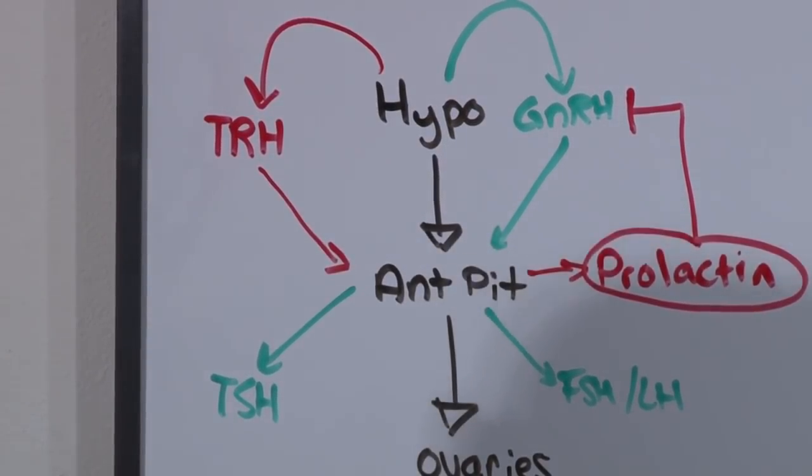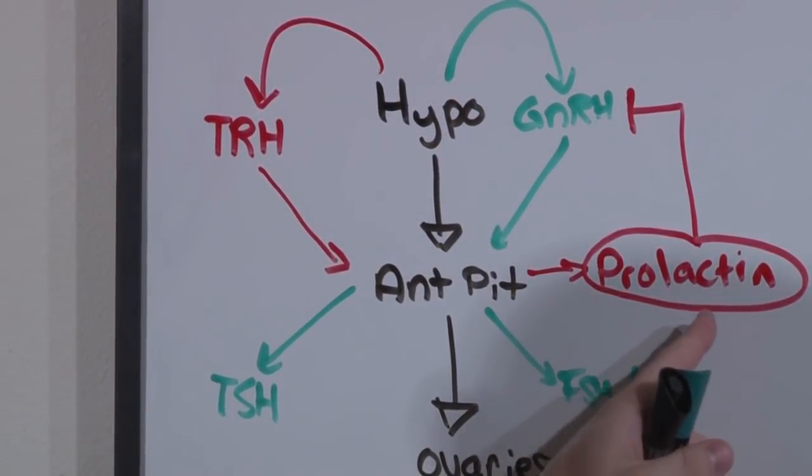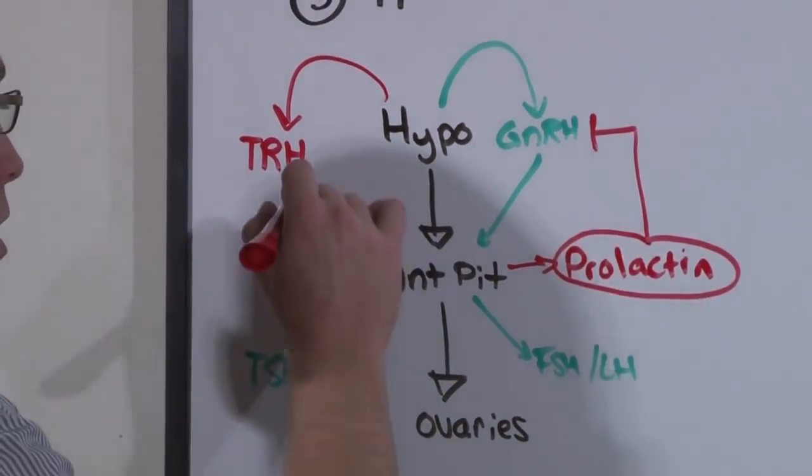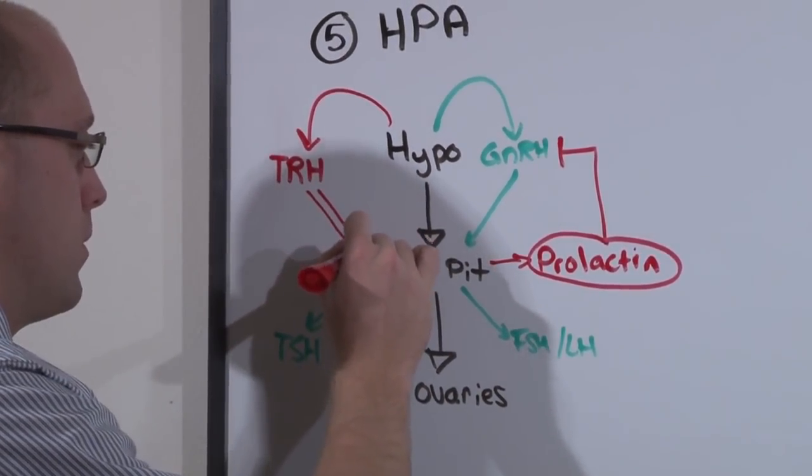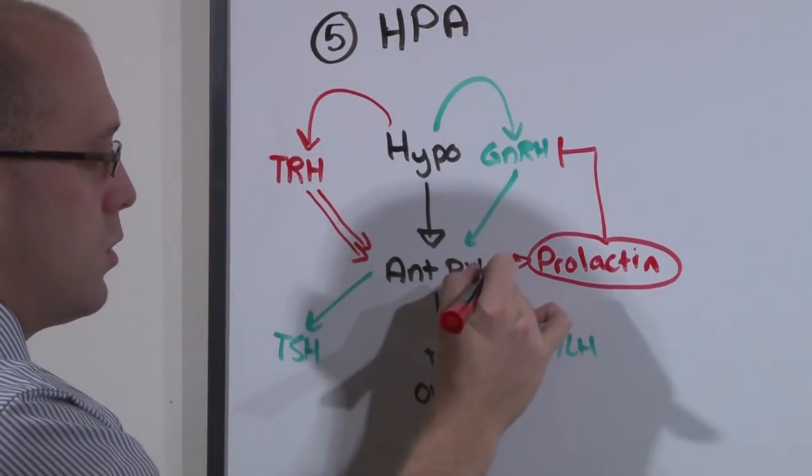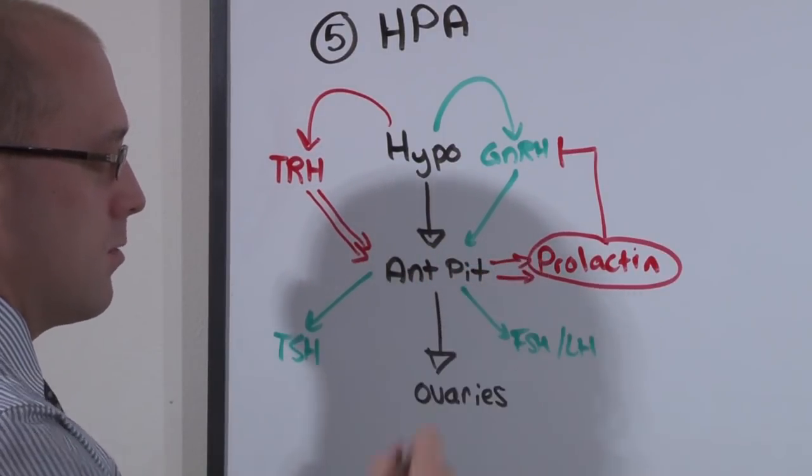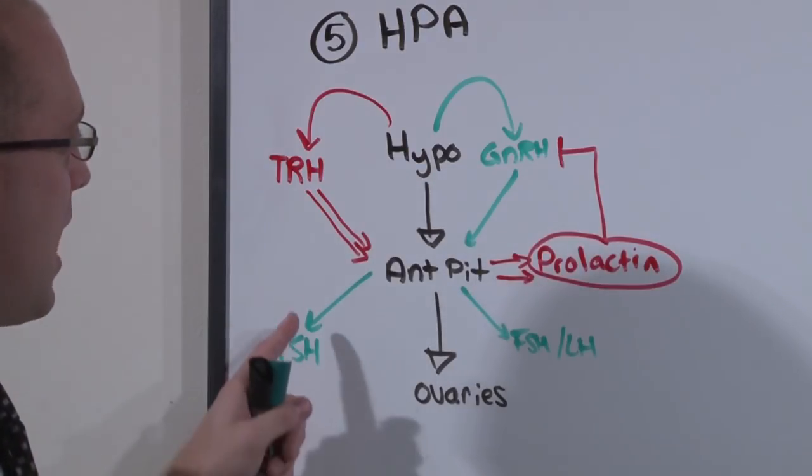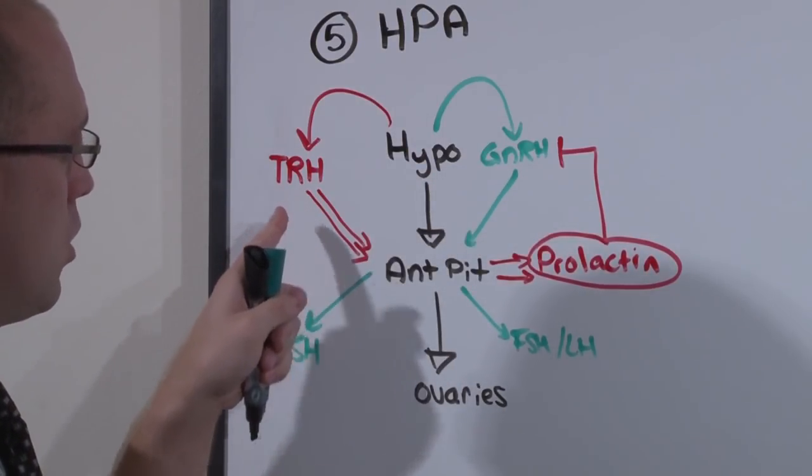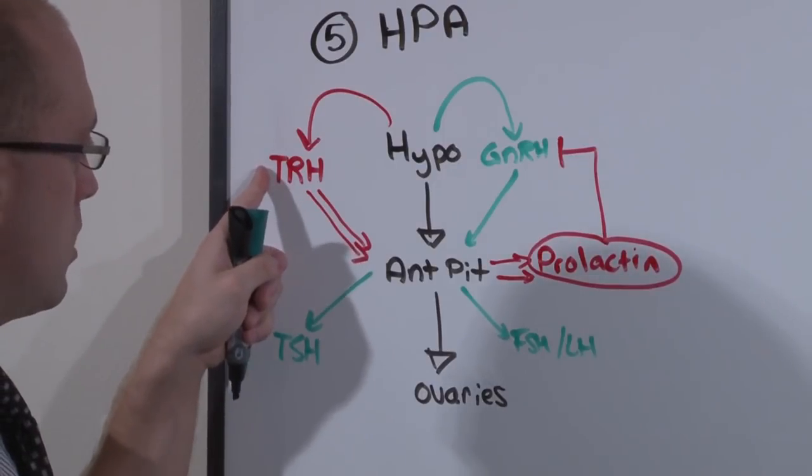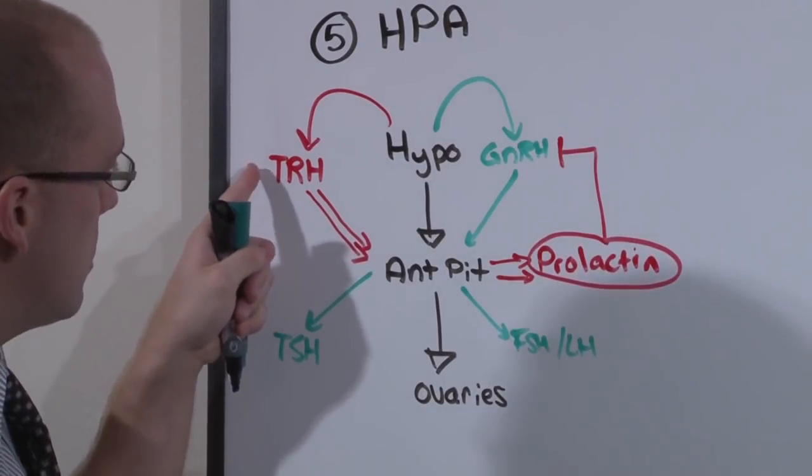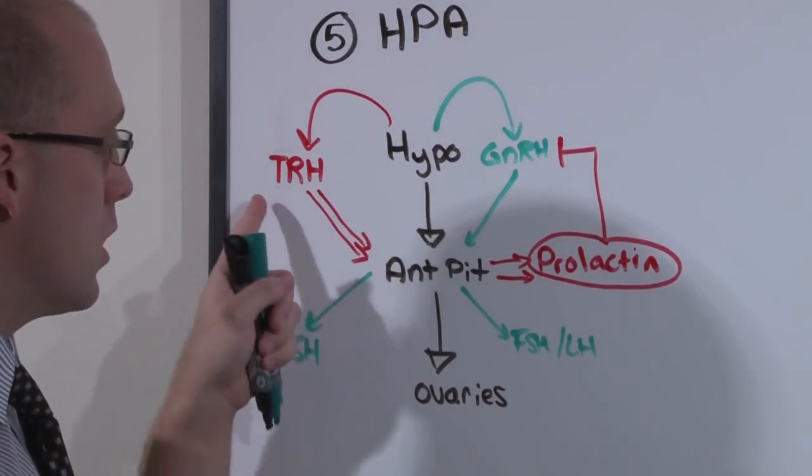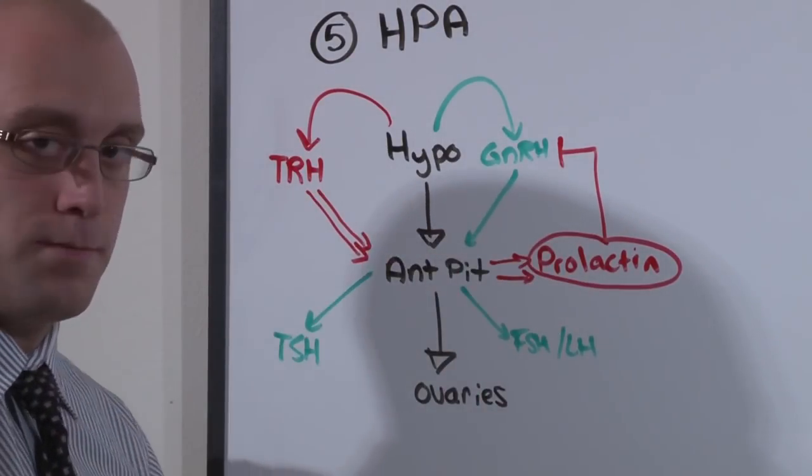So the goal here is to recognize the things that increase prolactin levels. One of those things is an elevated TRH. Excess TRH induces stimulation of prolactin. Don't worry about how, it just does. So that if you have a hypothyroid state, you lose the feedback inhibition on TRH. And excess TRH produces excess prolactin. Which is how hypothyroidism can induce secondary amenorrhea.